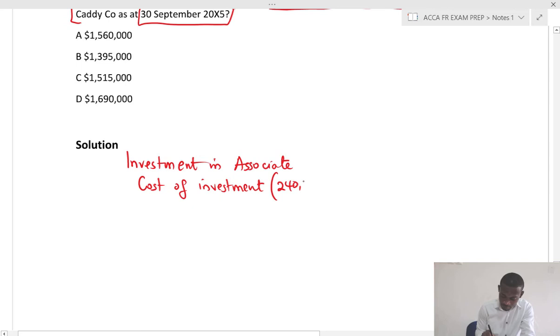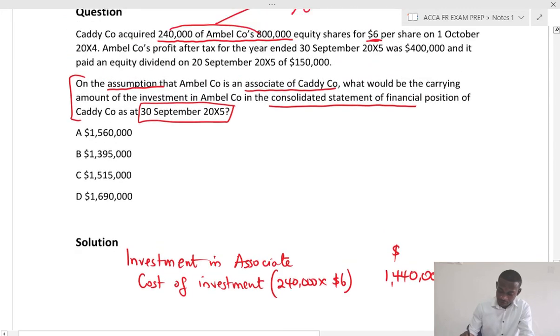We are given 240,000 times $6. Let's see how much that would give us. So that would be $1,440,000. And then we have to look out for the share of profit.